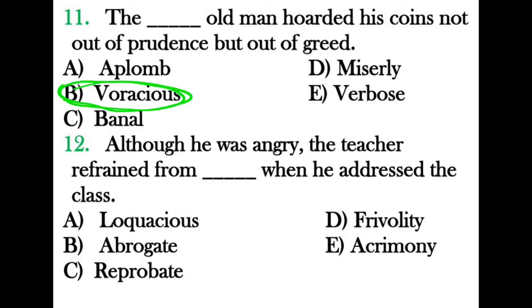Fill in the blank: 'Although he was angry, the teacher refrained from ___ when he addressed the class.' Loquacious is an adjective meaning talkative, but we need a noun after the preposition 'from.' The next two options are verbs meaning criticize, which also cannot fit. Frivolity is a noun meaning carelessness, but 'refrained from carelessness' doesn't make sense. The correct answer is 'acrimony' — bitterness.